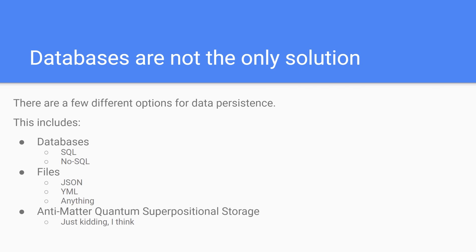Generally speaking, when I have lots of data that needs to be constantly manipulated and retrieved I'll use a database. For simpler stuff I'll probably just use a file. There are libraries like Jackson that help you work with JSON in Java. Also, there are persistent data containers — an abstraction within Spigot that lets you store data within the NBT data of entities in Minecraft. I have a video on those if you're interested. For these next couple of videos I'll be focusing on databases.